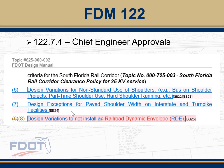Another update added is section 122.7.4, the special approvals for the chief engineer, which also came out as part of the bulletin. All design variations for non-standard use of shoulders — for instance, bus-on-shoulder projects, part-time shoulder use, and hard shoulder running — will need to be approved by the chief engineer. Additionally, any design exceptions for paved shoulder width on interstate and turnpike facilities will also require chief engineer approval, in an effort to get consistency statewide on paved shoulders for emergency shoulder use. Additionally, any design variations to not install a railroad dynamic envelope will also need his approval.